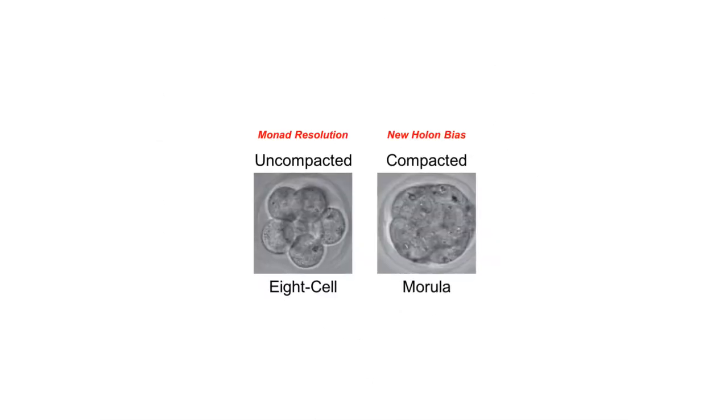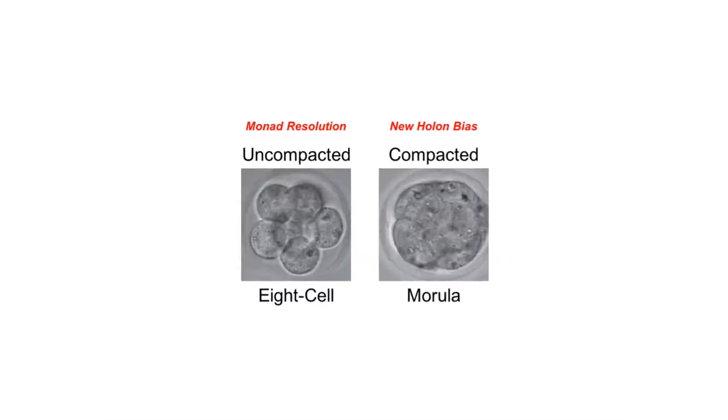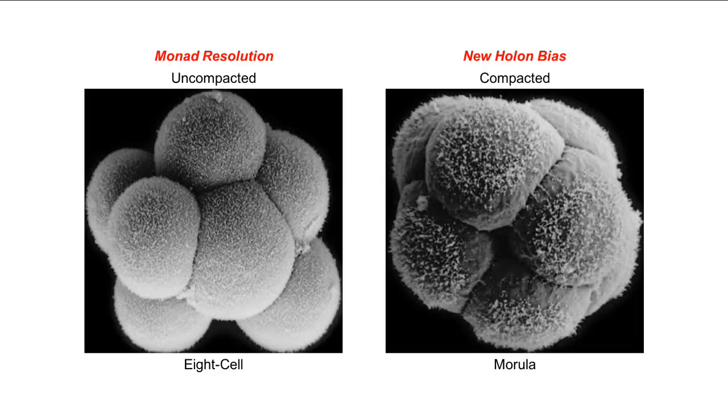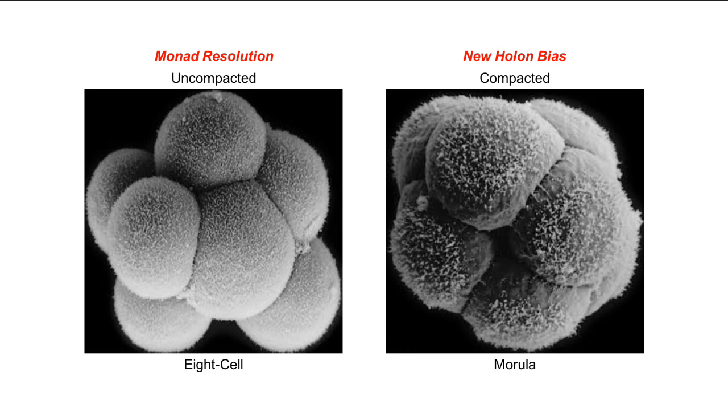As expected, nothing too remarkable occurs between the one-cell zygote, the two-cell embryo, and the four-cell embryo. But on the third cleavage event, the eight-cell embryo begins a process of compaction.